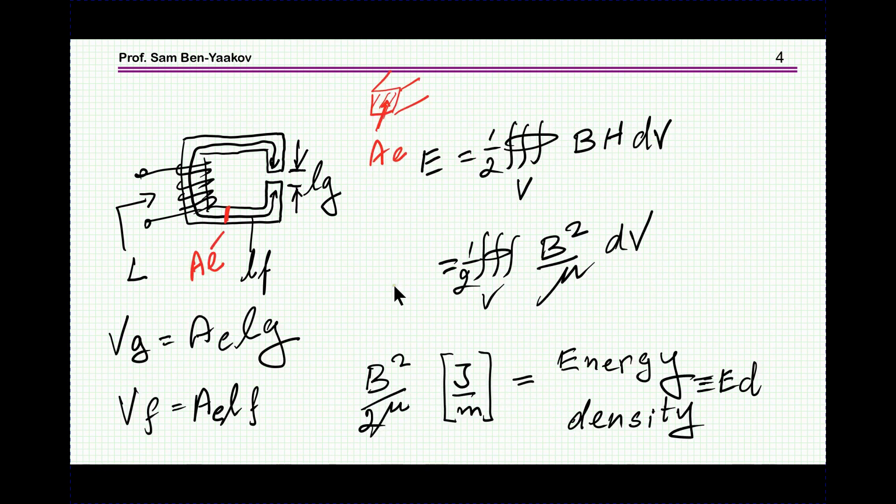So what about magnetic energy? Magnetic energy is equal to one half the volume integral of B·H. Since H is B over μ, I can write it as a volumetric integral: one half B² over total μ over the total volume.